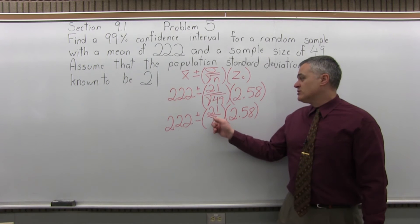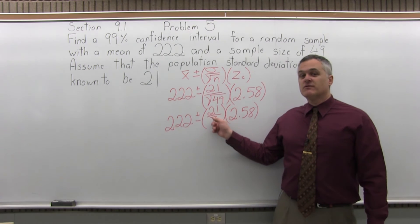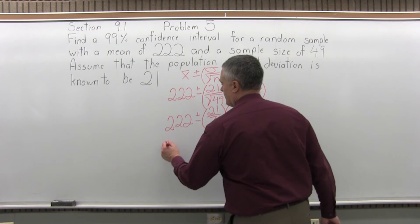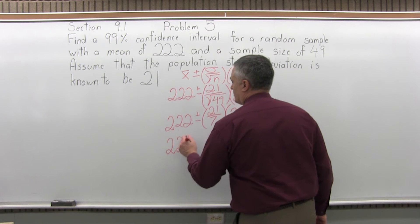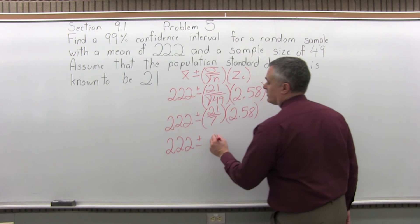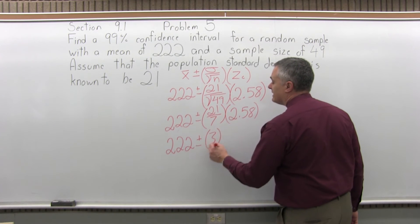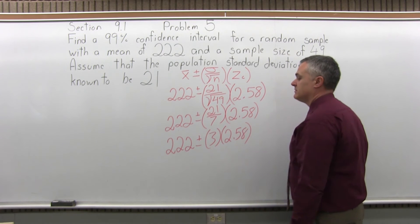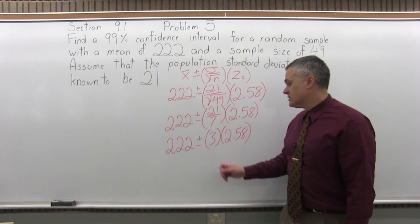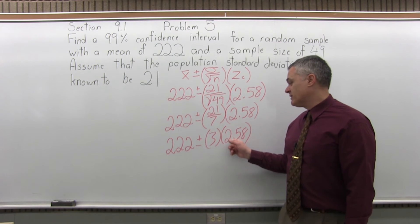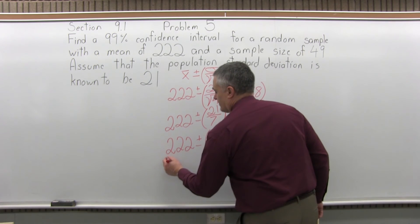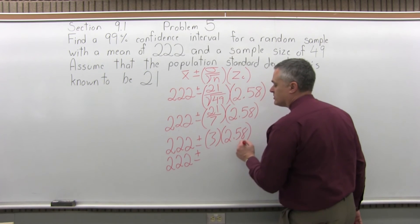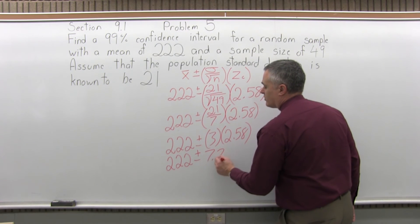The next step is to reduce 21 over 7, which very conveniently reduces to a whole number, which is 3. So I'll have 222 plus or minus 3 times 2.58. Now I can multiply 3 times 2.58, giving 222 plus or minus 7.74.